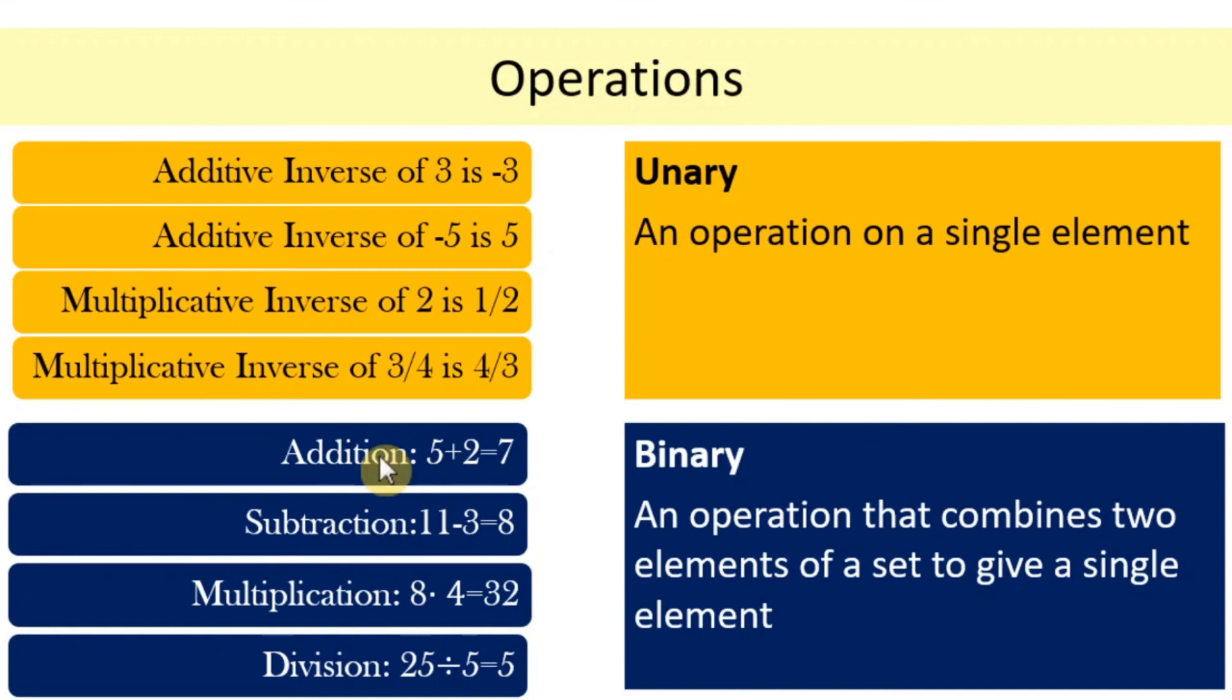The four fundamental operations that you know are not unary but are binary operations because they are operations that are used between two or more numbers. For example, you can only add at least two numbers. It does not make any sense when you say 5 plus. It is an operation that has to be applied between two or more numbers. So you're given 5 and 2. If you add it, that's the only time you can give a result which is 7. Same goes for subtraction. You need at least two numbers to apply the operation. It's a binary operation from the prefix bi which means two.